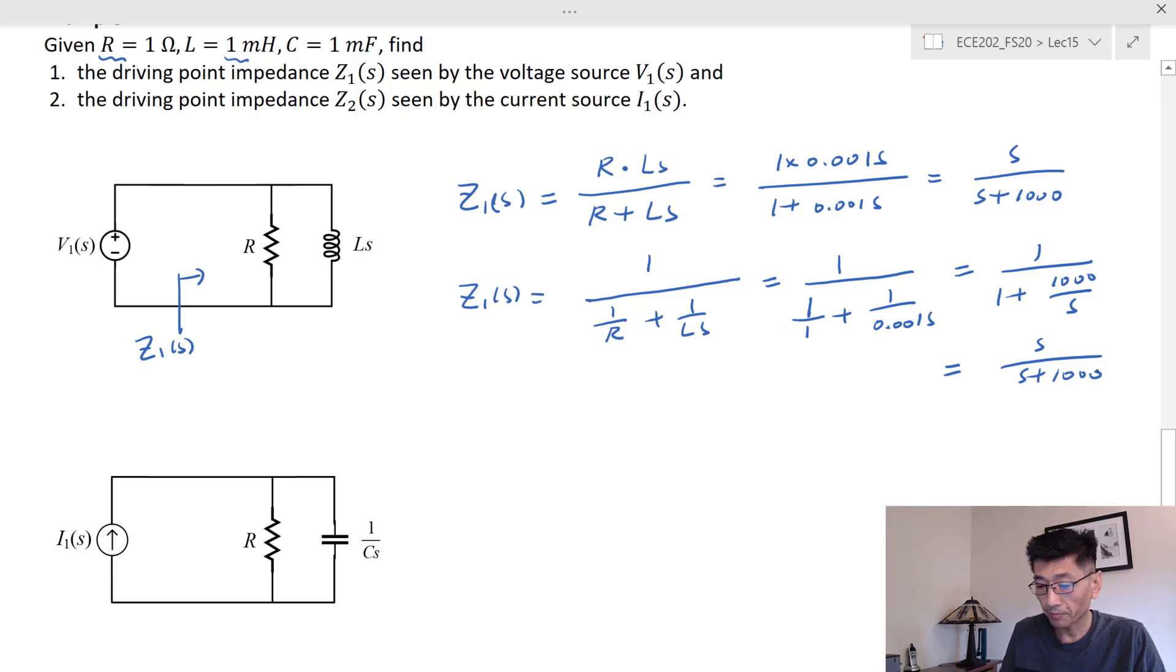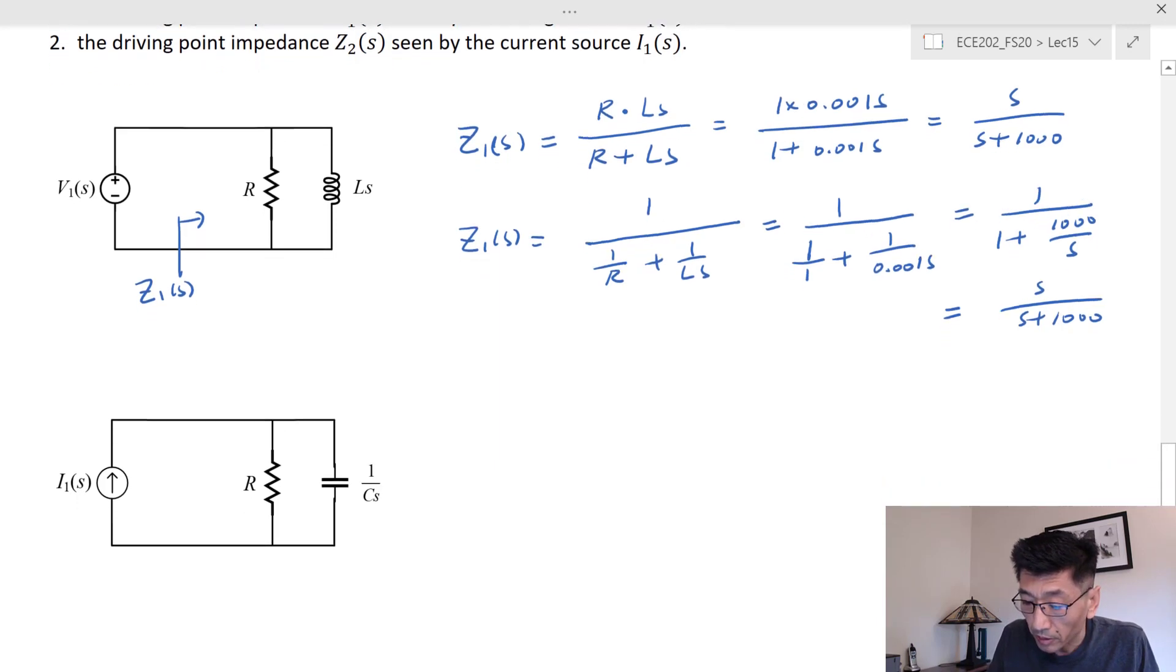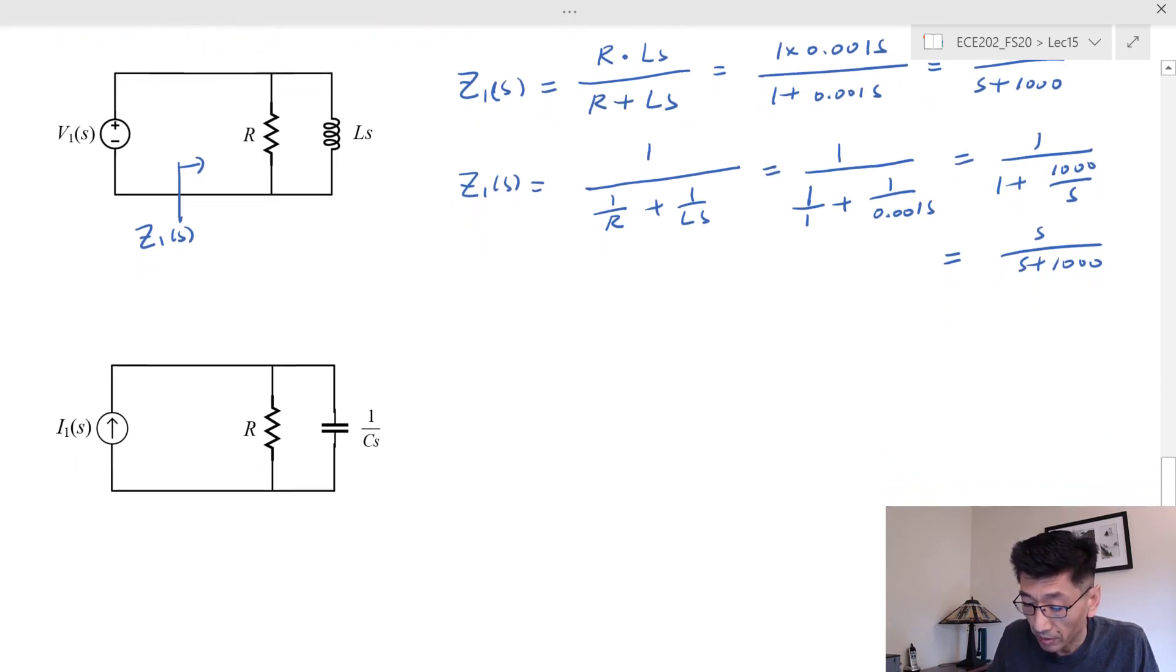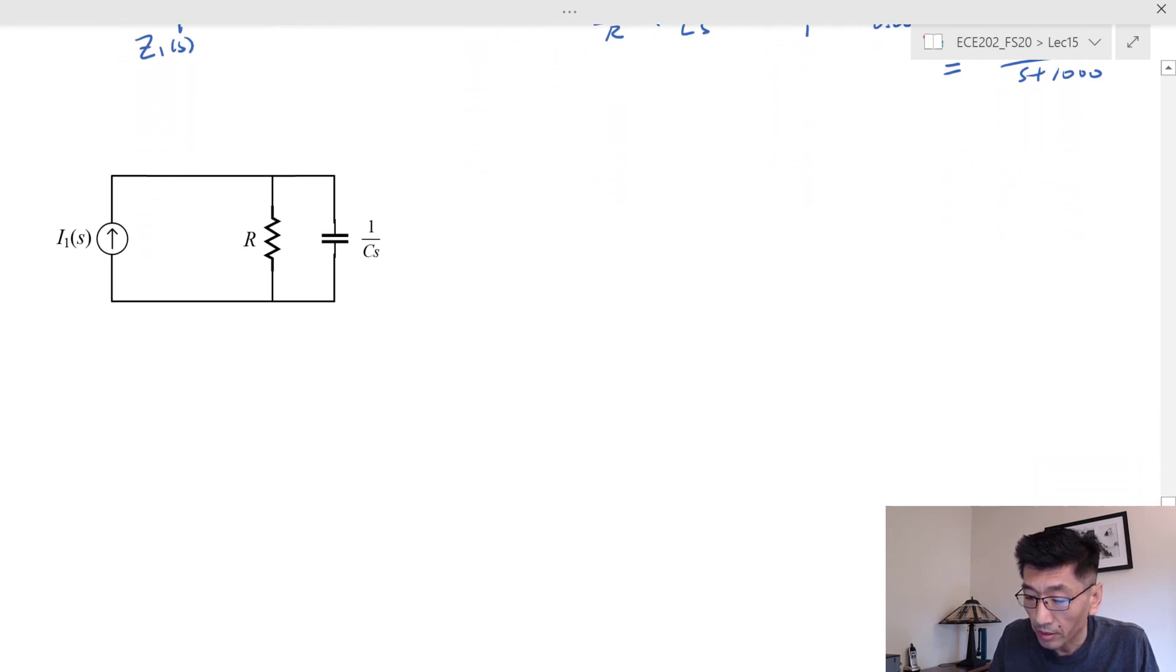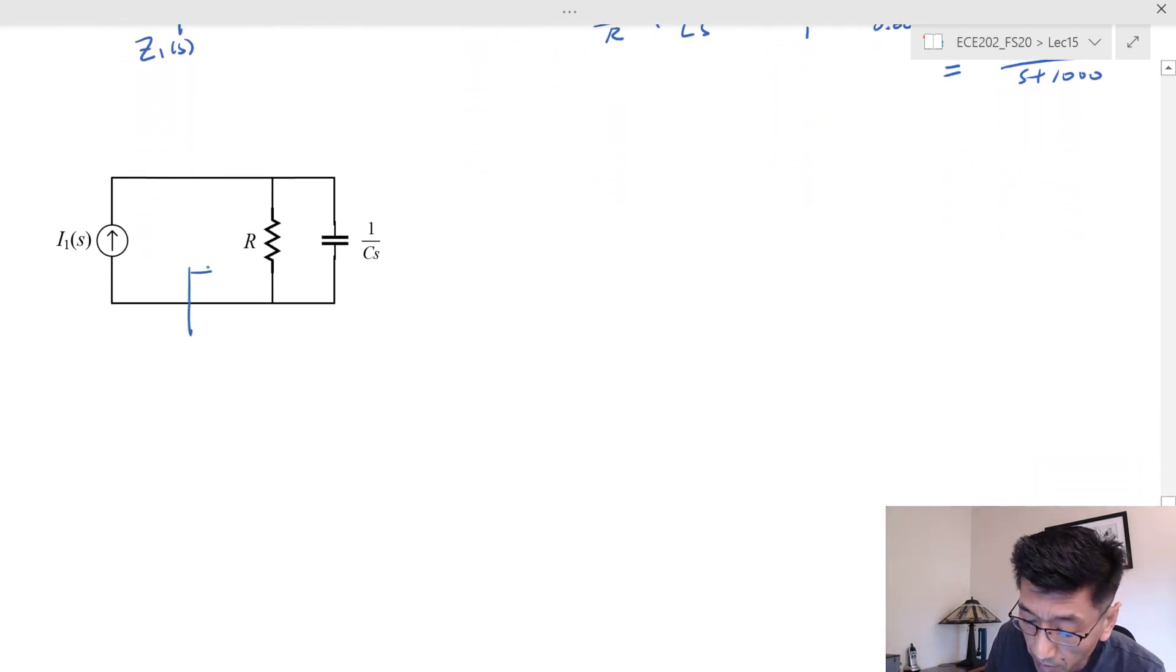Let's look at the second one here. The second one is the resistance in parallel with the capacitance impedance. In this case, the equivalent impedance or the driving point impedance seen by this current source is Z₂(s).